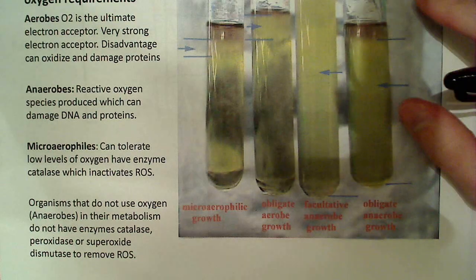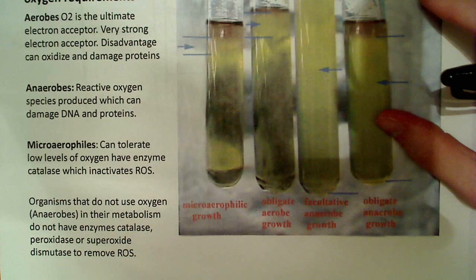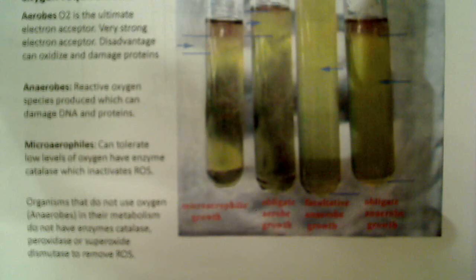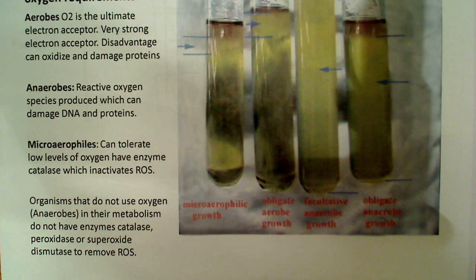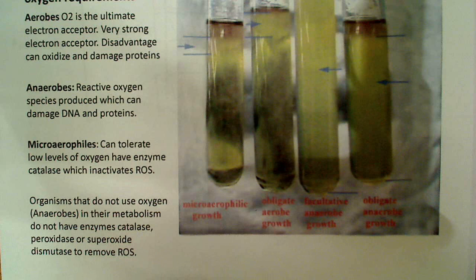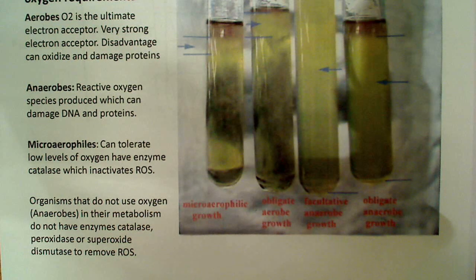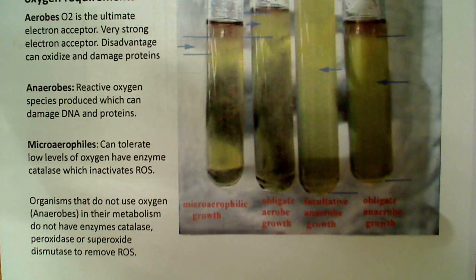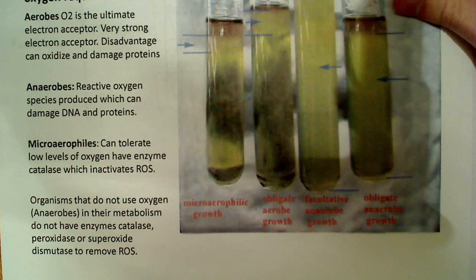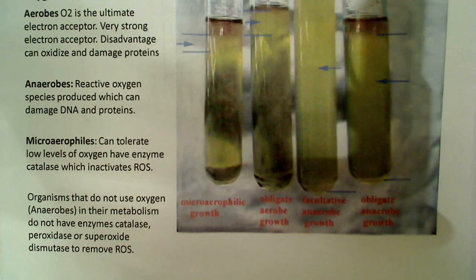The take-home point here is that organisms that do not use oxygen, namely anaerobic organisms in their metabolism, do not have the enzymes catalase, peroxidase, and superoxide dismutase to remove reactive oxygen species. So they're usually killed by them. You won't see anything growing in the upper area of the test tube if you have an anaerobic organism.